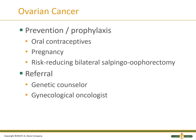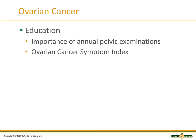For prevention and prophylaxis, screening, risk-reducing strategies, pregnancy, and oral contraceptives are considered. We see less cancer risk in women who have had babies and been on birth control. Refer to a genetic counselor, gynecologist, and oncologist — these are the specialists who manage these cases. Education is so important: the significance of annual pelvic exams, looking at anything abnormal. There's also an ovarian cancer symptom index available, with pamphlets and resources for patient education.